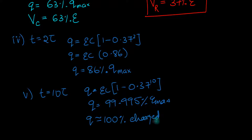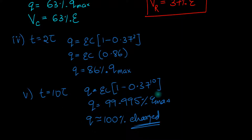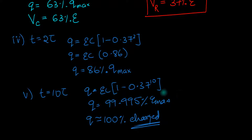Although theoretically it takes infinite time, practically you just wait for 10 tau. Even before that, we can say the capacitor is fully charged. The same applies to current — by the time you reach 10 tau, the current would have died out to almost 0. Let's take an example.